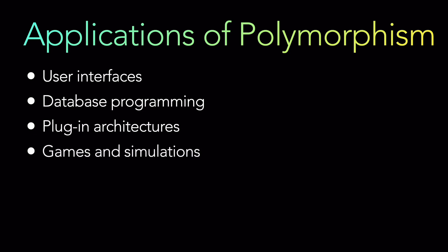In games and simulations, polymorphism is often used to represent different types of objects and behaviors. For example, a game might have different types of characters, each with their own set of abilities and behaviors, all implemented using polymorphism. Next is financial applications. In financial applications, we represent different types of financial instruments such as stocks, bonds, and derivatives. Each instrument can be represented using a common interface, which allows easy manipulation and analysis of financial data. There are many more applications of polymorphism.